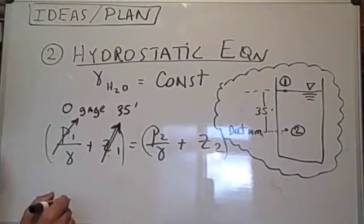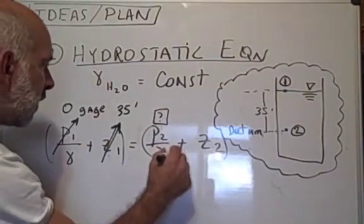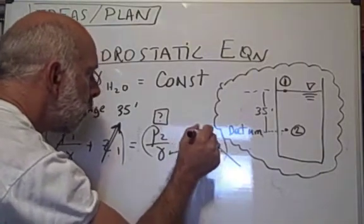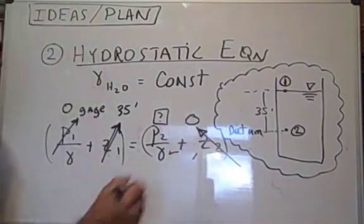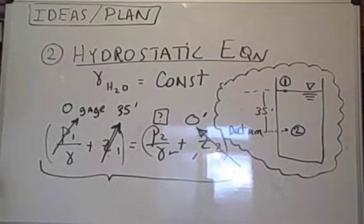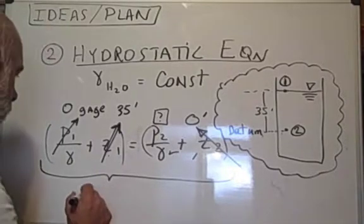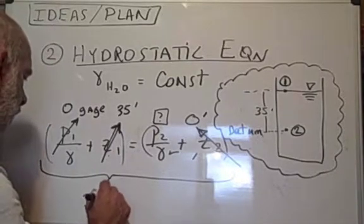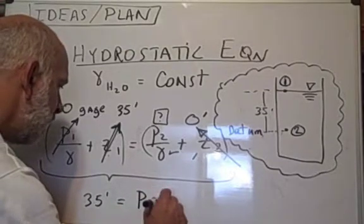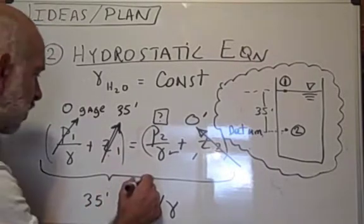So there's 35 feet. The pressure at two is our goal. The specific weight of water is known, and the elevation at two with respect to our datum was zero feet. And so after term by term analysis, the hydrostatic equation reduces to 35 feet equals P2 over the specific weight of water. And there's our goal.